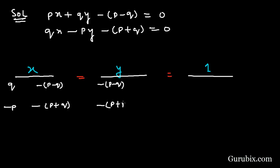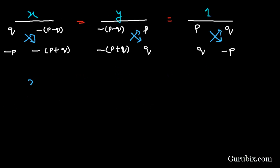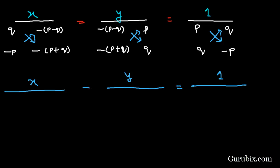We shall write minus p minus q and repeat it: minus p plus q. Now we shall write a1, a2 — that is p and q — and repeat this p and q, then write b1, b2 — that is q and minus p. Now we shall draw the cross multiplication signs and write x, y, 1 with the sign of equality.